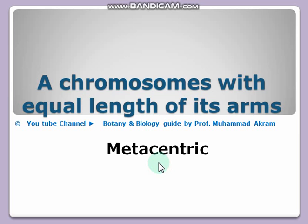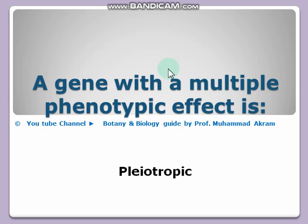Chromosomes in which the centromere is at its midpoint, having two equal lengths of arms, are called metacentric. If the centromere is near the middle, it is submetacentric.